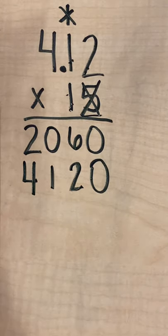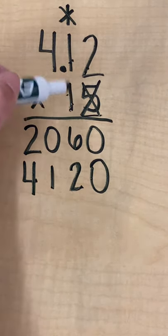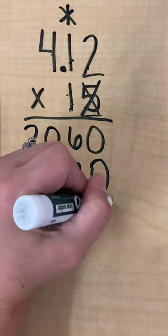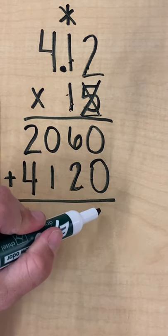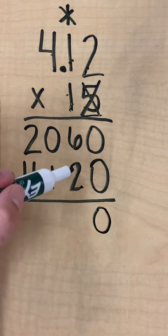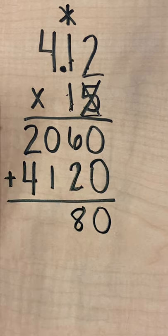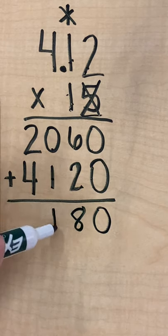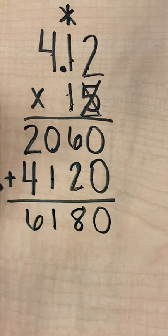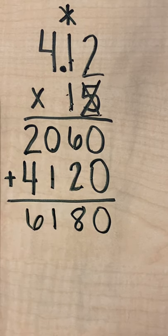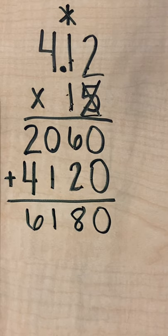Okay, so I'm completely done. I don't have anything else up here. I've multiplied my bottom numbers times all my top numbers, so now I can just add up my partial products. 0 plus 0 is 0, 6 plus 2 is 8, 0 plus 1 is 1, 2 plus 4 is 6.